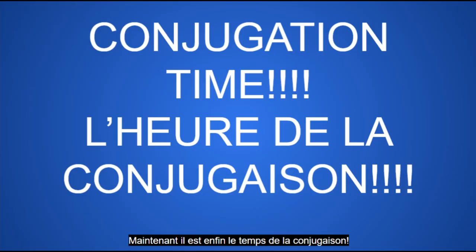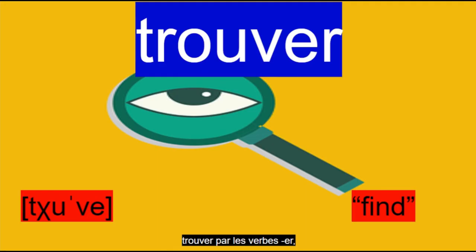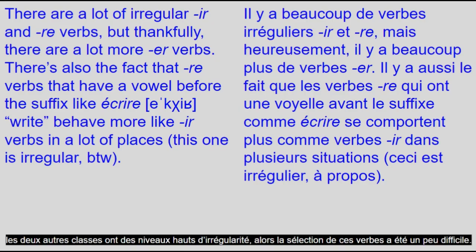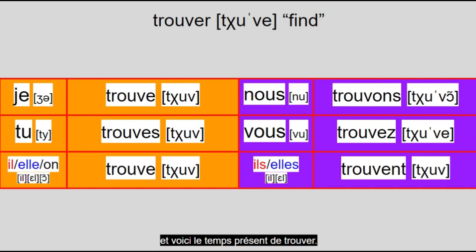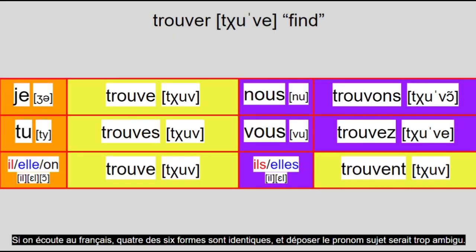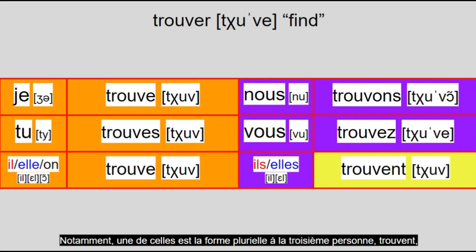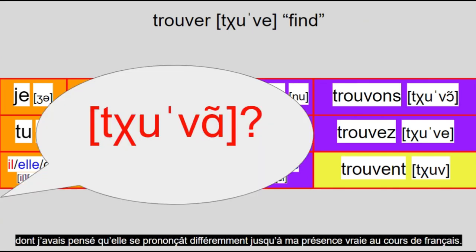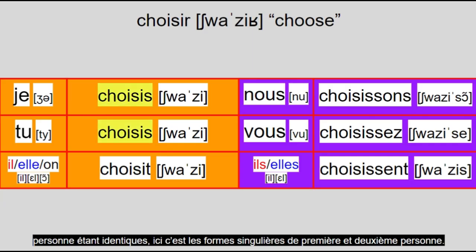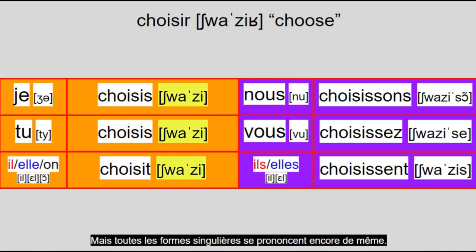Now it is finally conjugation time. The regular verbs I will be using to represent the verb classes will be trouver for the -er verbs, choisir for the -ir verbs, and perdre for the -re verbs. I should mention though, that while the -er class is by far the most common, the other two classes have high degrees of irregularity. Let's start with the indicative mood. Here's the present tense of trouver. Look at the pronunciations — it's easy to understand why French became pro-drop-resistant. Despite the spelling being largely unique for most of the forms, if you're listening to French, four of the six forms are identical, and dropping the subject pronoun would be way too ambiguous. Notably, one of those is the third-person plural form trouvent, which is pronounced the same as trouvons. Here's choisir — instead of the first and third person singular forms being identical, here it's the first and second person singular forms. All the singular forms are still pronounced the same. Now here's perdre with much of the same.